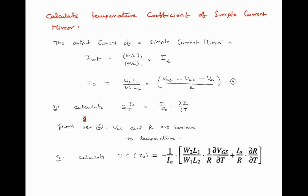Now we will calculate the temperature coefficient of a simple current mirror in equation form. The steps are: first, write the output current equation; second, calculate the sensitivity with respect to temperature; third, calculate the temperature coefficient.